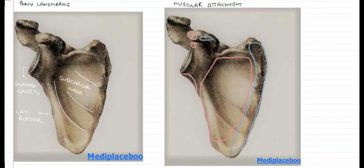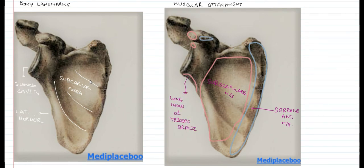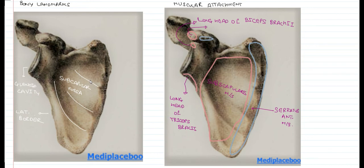From the major portion of the subscapular fossa originates the subscapularis muscle. On the medial border of the coastal surface we have the insertion of the serratus anterior muscle. From the infraglenoid tubercle originates the long head of triceps brachii, and from the supraglenoid tubercle originates the long head of biceps brachii — so both long heads of the arm originate from the supraglenoid and infraglenoid tubercles. From the apex of the coracoid process originate the coracobrachialis muscle and the short head of biceps brachii.